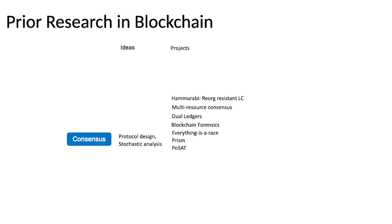We had this paper called 'Everything is a Race,' which analyzes conditions under which a proof of work, proof of stake, proof of space — any of these longest chain type protocols — when they are stable, when are they secure. We built on top of some of that understanding. We had a paper called Prism, which is a proof of work protocol which has very low latency. The other work we did is called POSAT, which is how do you create a dynamically available proof of stake protocol.